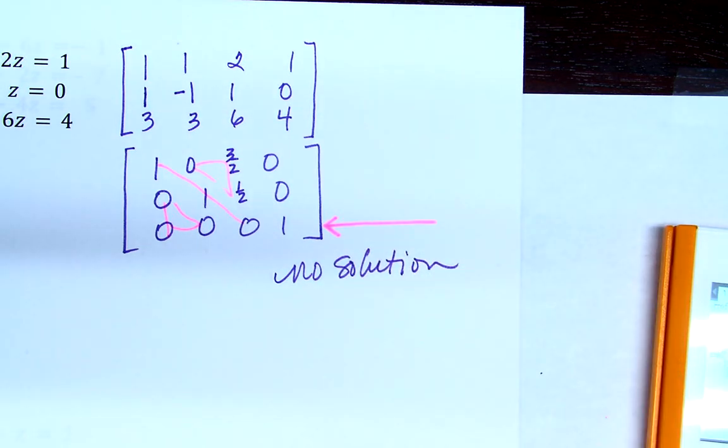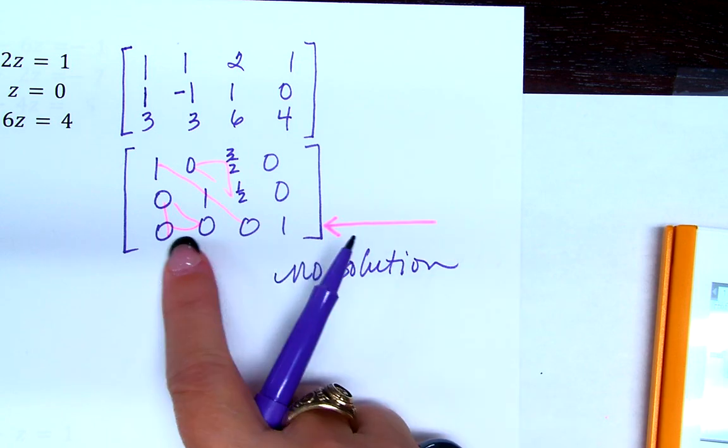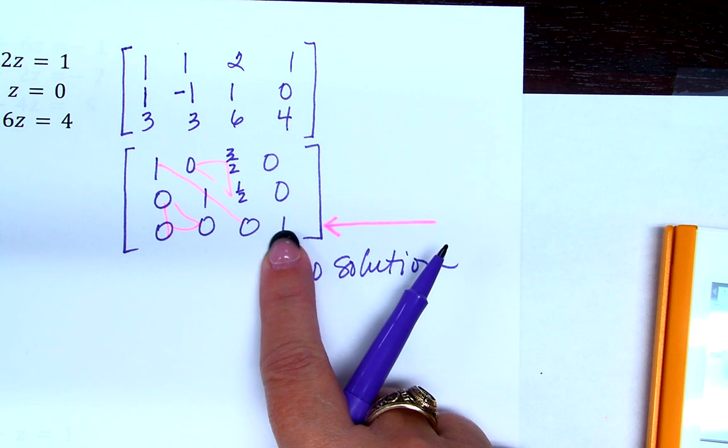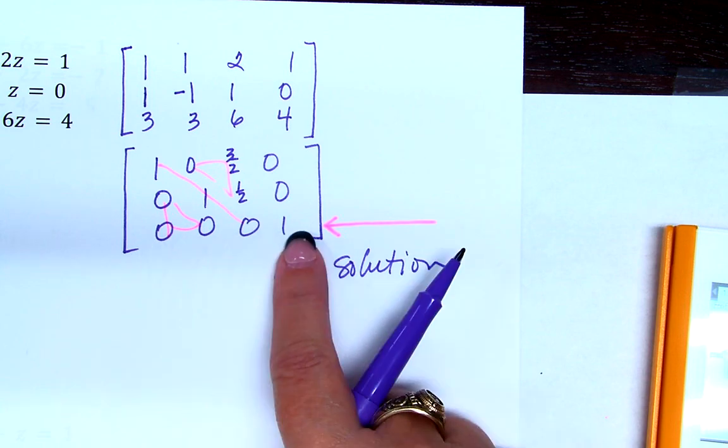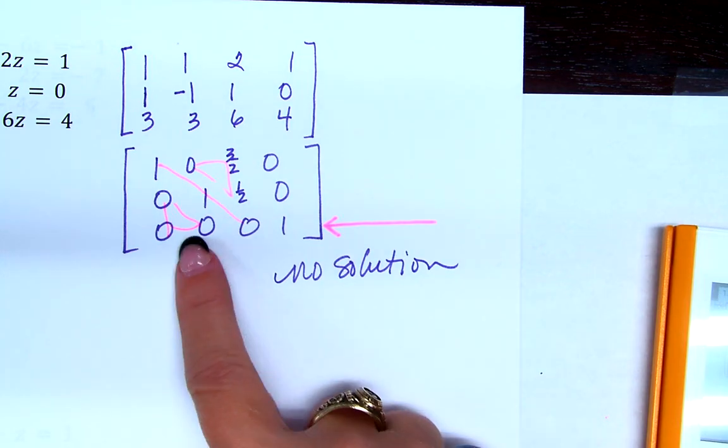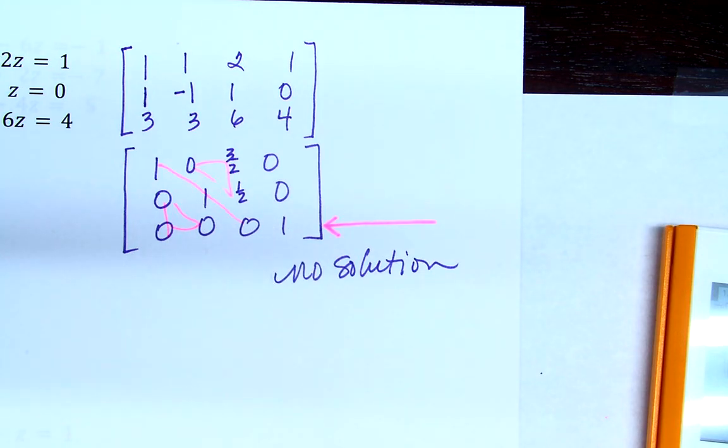Guys, what would infinitely many solutions look like? The last line would be 0, 0, 0, 0, right? Because 0 does equal 0, right? If it had a last line of all 0's, that would be infinitely many solutions. But if the last line is 0, 0, 0, something else, that's no solution. Do you see the difference? Do you have any questions about this? No. Peace.